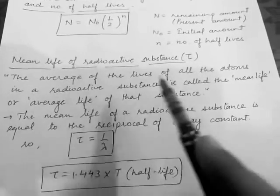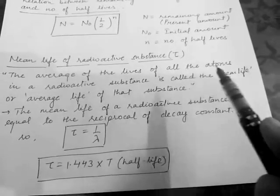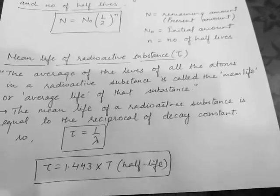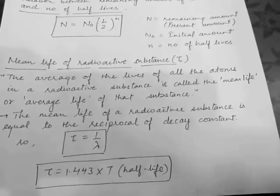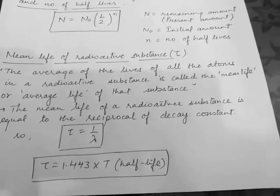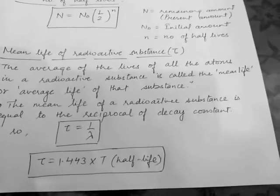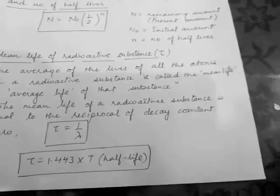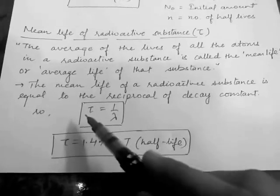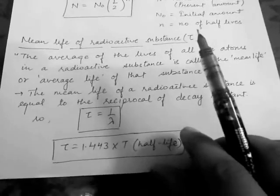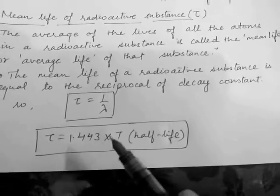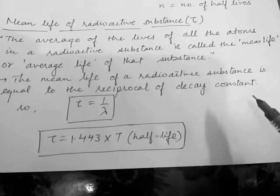The next topic is mean life, denoted by τ. The average of the lives of all atoms in a radioactive substance is called mean life. In a sample, different atoms may decay at different times — some in the first half-life, some in the second, and one may have a life approaching infinity. The mean life is also the reciprocal of the decay constant: τ equals 1/λ. The relation between mean life and half-life is τ equals 1.443 times the half-life.